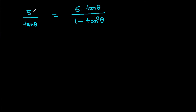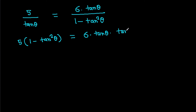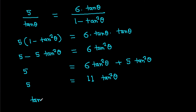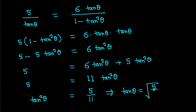If we cross multiply, then 5 times (1 minus tan squared theta) equals 6 times tan squared theta. So 5 minus 5 tan squared theta equals 6 tan squared theta, which gives 5 equals 11 tan squared theta. Therefore, tan squared theta equals 5 over 11, and tan theta equals root of 5 over 11.